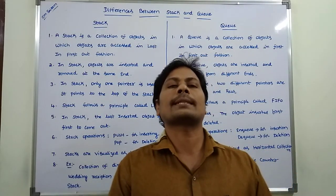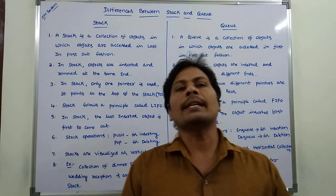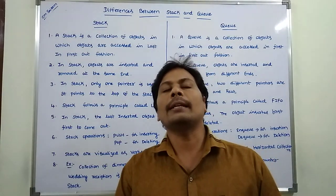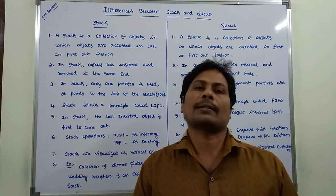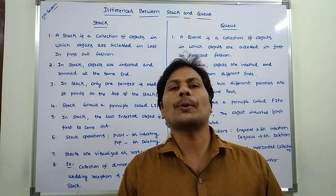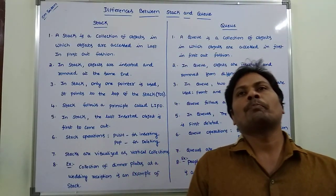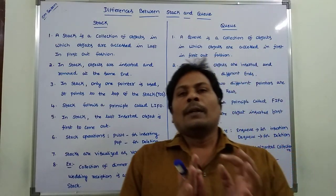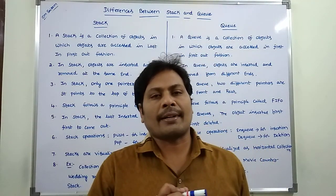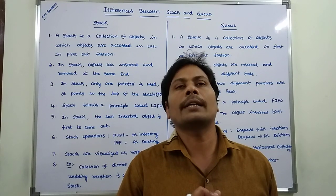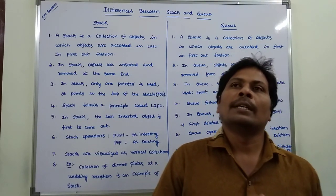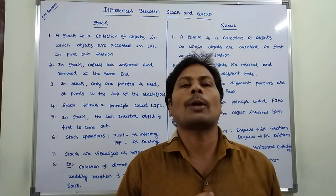Now we have to discuss about differences between stack and queue. First of all, both stack and queue are linear data structures — that means the data or information is stored in the form of linear fashion. A stack is a linear data structure in which insertion and deletion can take place at one end, and that end is called the top of the stack.